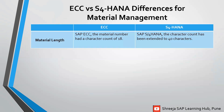Next one: material length. In ECC, the material number had a character count of 18. In S4HANA, the character count has been extended to 40 characters.